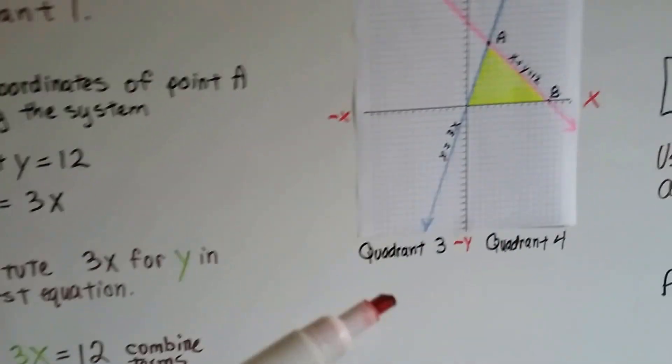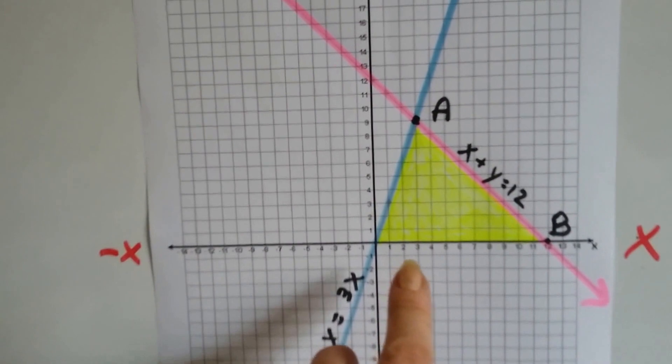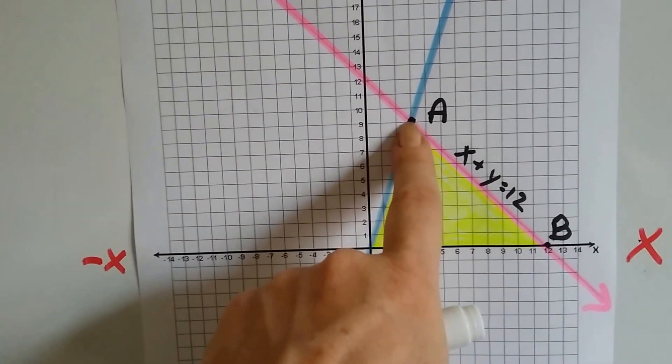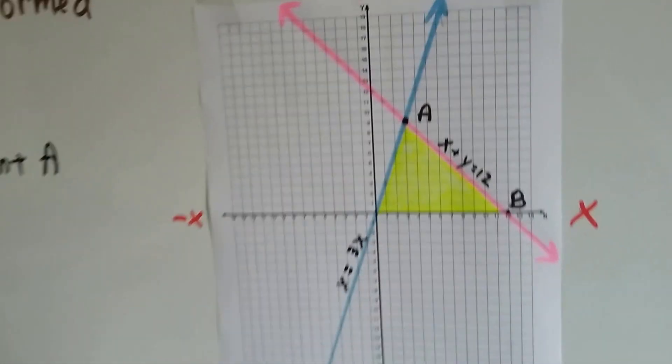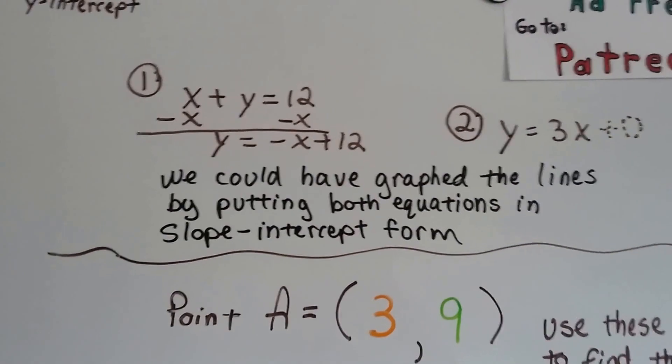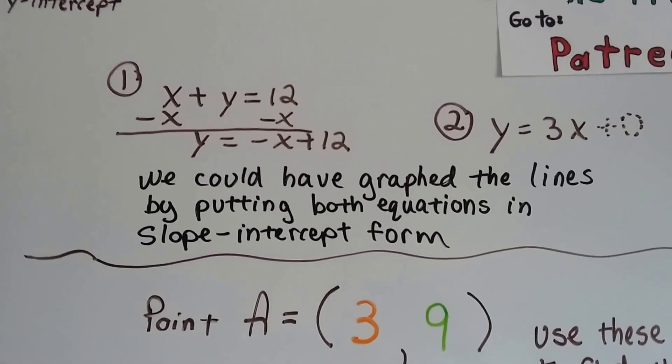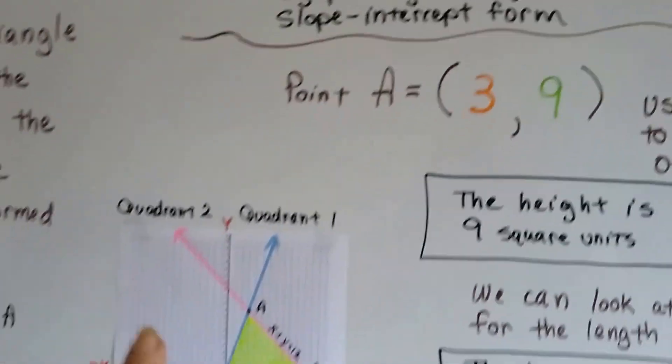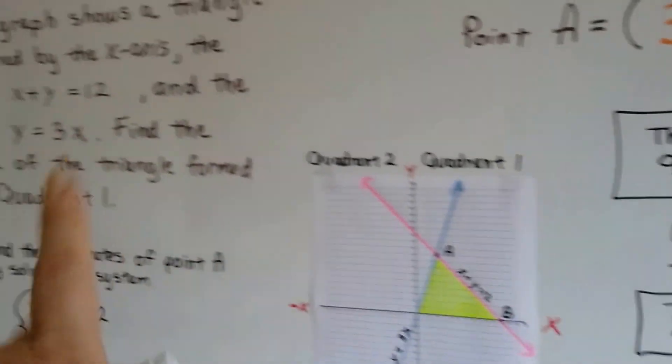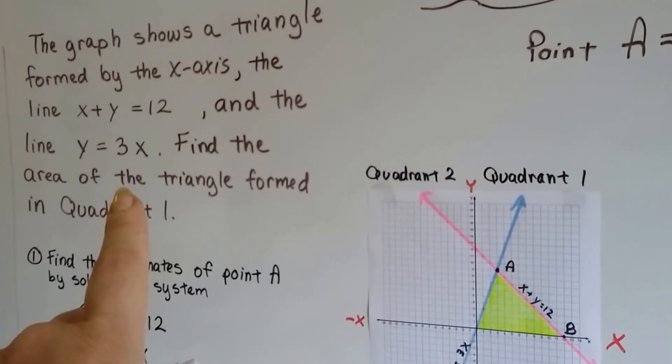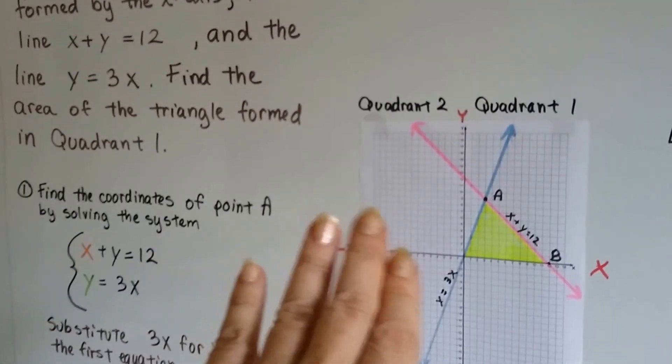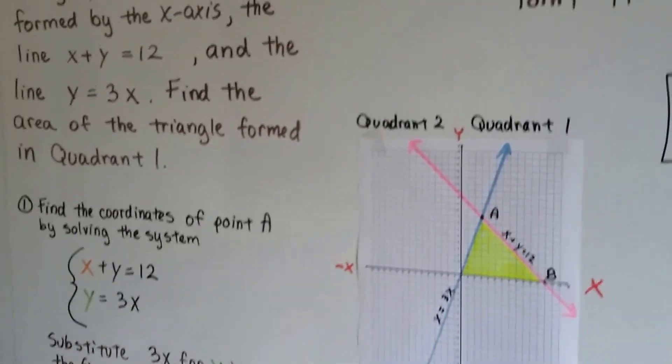Now, yes, we could have looked on here and seen that it's at 3. Here's 3 on the x and 9. But, we could have graphed the lines by putting both equations in slope-intercept form ourself if it wasn't already on this piece of paper and if it wasn't already given to us and it told us to find the area of a triangle for this equation and that equation, that system of equations, and we didn't have anything drawn, we could have done it ourself. Couldn't we?